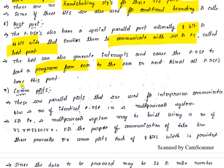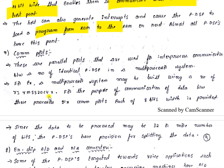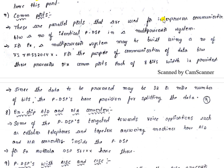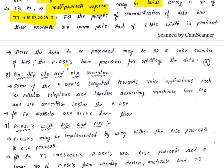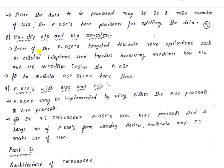Common ports are parallel ports used for inter-process communication between a number of identical programmable DSPs in a multi-processor system. In a multi-processor system, common ports of 8 bits width each are provided for communication between processors. Since data to be processed may be 32 or more bits, the programmable DSPs have provision for splitting this data across multiple common ports.